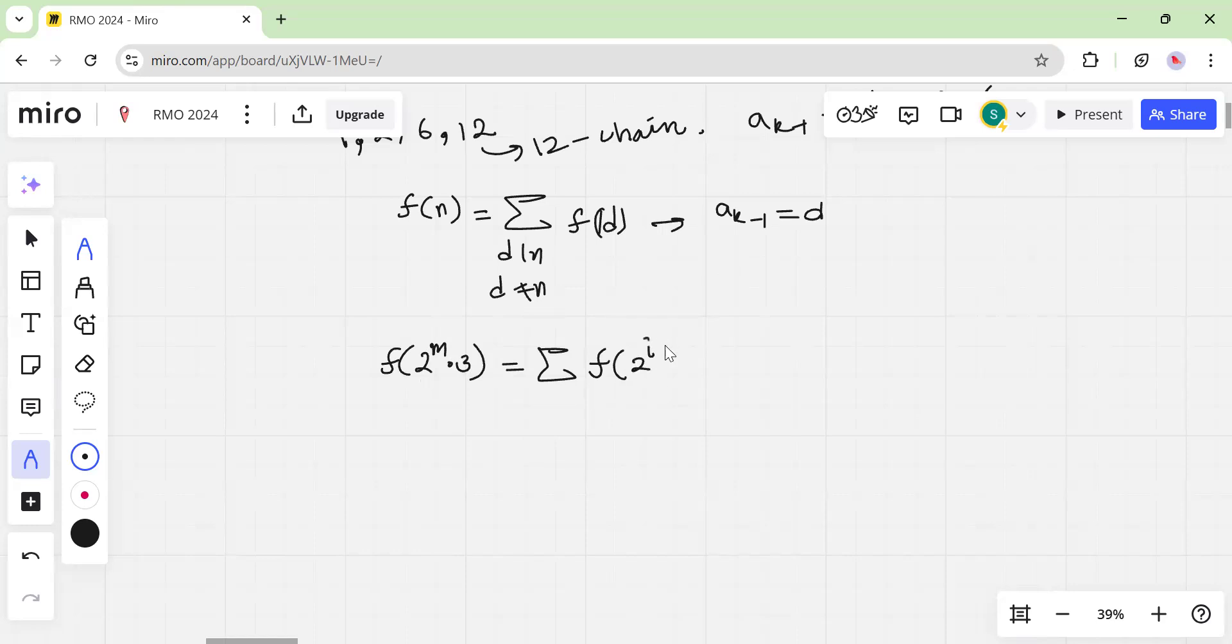So this is just powers of i. I can go from 0 to m, yes to m, because 2 raised to m is also not equal to 3. So that also works plus summation of 2 to the i times 3.